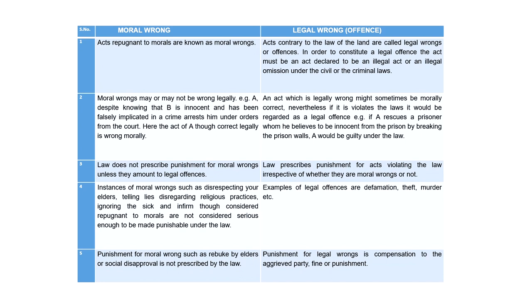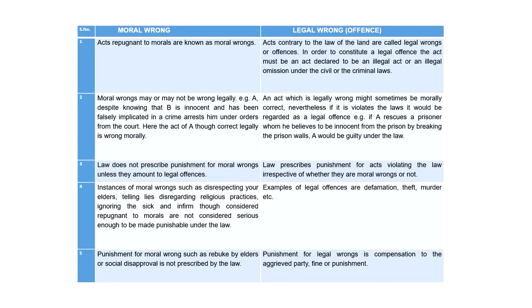Conversely, an act which is legally wrong might sometimes be morally correct. Nevertheless, if it violates the laws, it would be regarded as a legal offense. For example, a person goes and rescues a prisoner whom he believes to be innocent from the prison — not a person conclusively determined innocent by a court, but someone he personally believes is innocent. He rescues that prisoner by breaking the prison laws. What he has done is morally correct in his own belief, but it is a legal wrong.